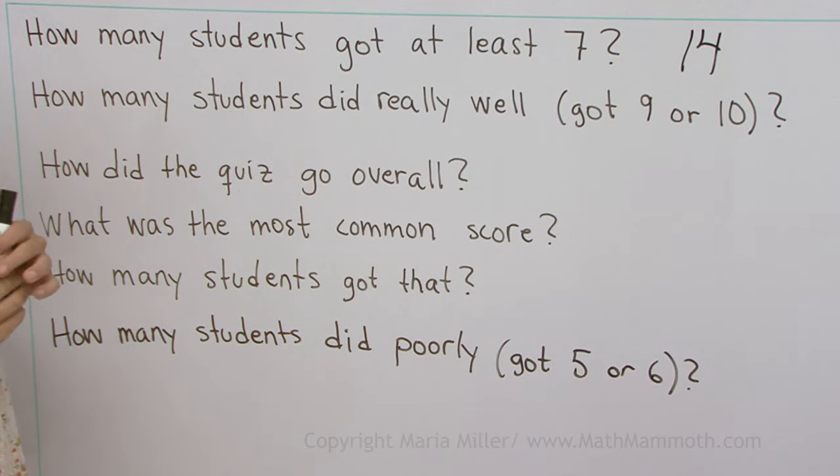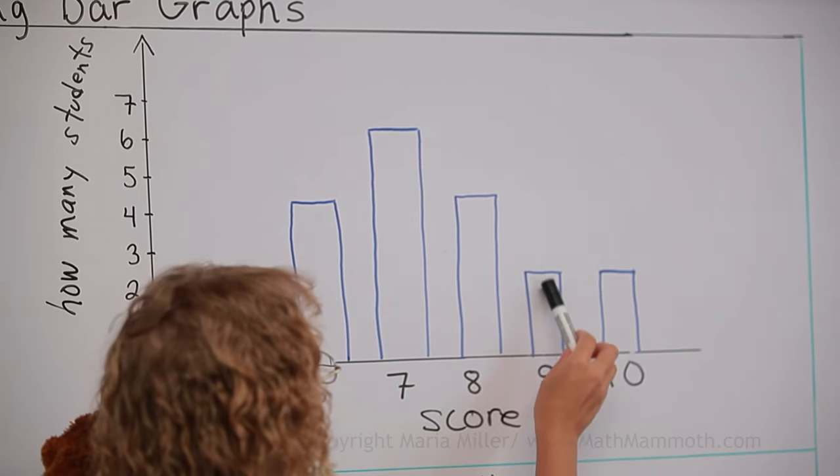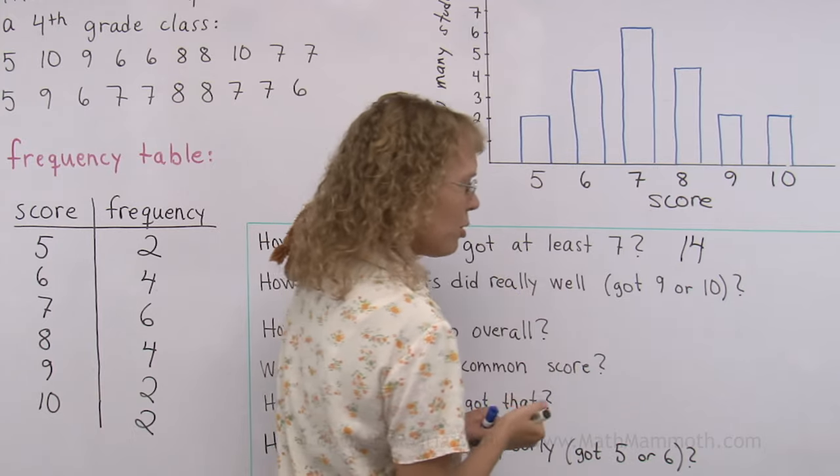How many students did really well? They got nine or ten. Okay, these and these. That would be four students, right?